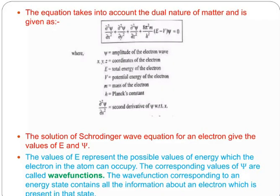The equation takes into account the dual nature of matter. Psi is the amplitude of the electron wave, x, y, z are coordinates of electron, E is total energy, V is potential energy of the electron, m is mass of electron, and h is Planck's constant. Del squared psi by del x squared is the second derivative of psi with respect to x. The solution of Schrödinger wave equation for an electron gives the value of E and psi. The value of E represents the possible values of energy which the electron in the atom can occupy. The corresponding value of psi are called wave functions, and the wave function corresponding to an energy state contains all the information about the electron which is present in that state.